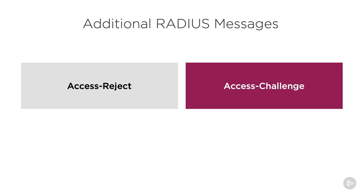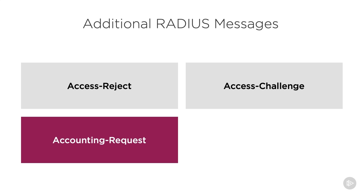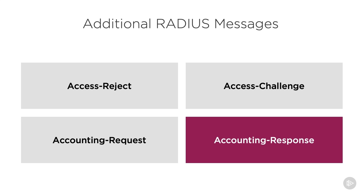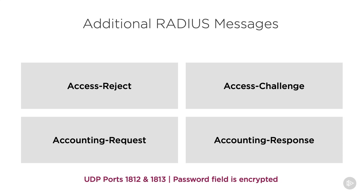There are also accounting messages. An accounting request is sent from the AAA client to the AAA server stating what the user did, such as accessing a network resource. The server sends back an accounting response message confirming receipt. RADIUS authentication and authorization messages occur over UDP port 1812, while RADIUS accounting messages occur over UDP port 1813, and only the password field is encrypted — not the entire payload.